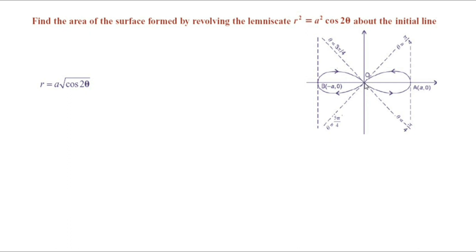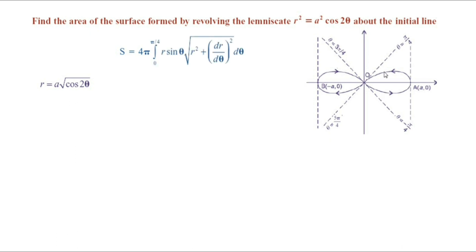When 0 is a repeated root, we get two loops. One loop is formed from 0 to a, and another is formed from 0 to negative a. Thus we get the two loops of the curve. Therefore, the required surface area S is the area of the surface generated by revolving the two loops about the initial line.